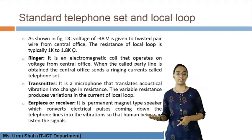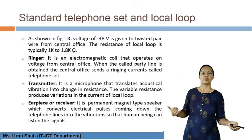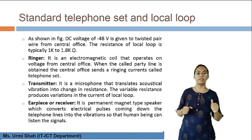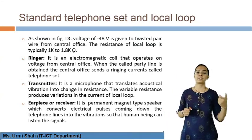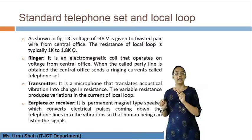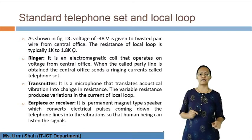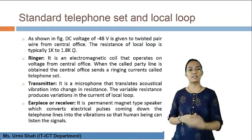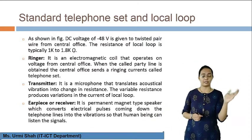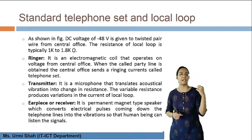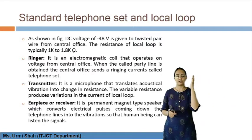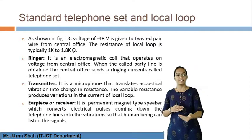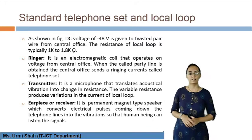Wherever there is a transmitter or sender unit, there is also a receiver unit — the earpiece. It is a permanent magnet type speaker which converts electrical pulses coming down the telephone lines into vibrations so that a human being can listen to the signals. The earpiece receives the electrical pulses and converts them into sound or audio signals which our ears can understand.